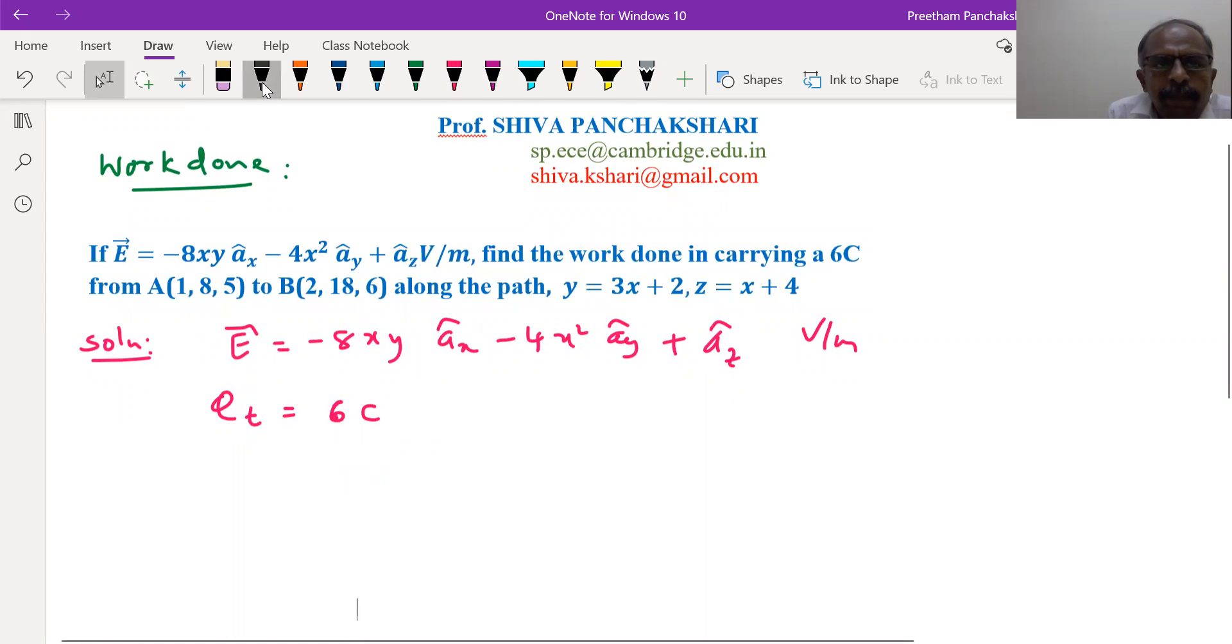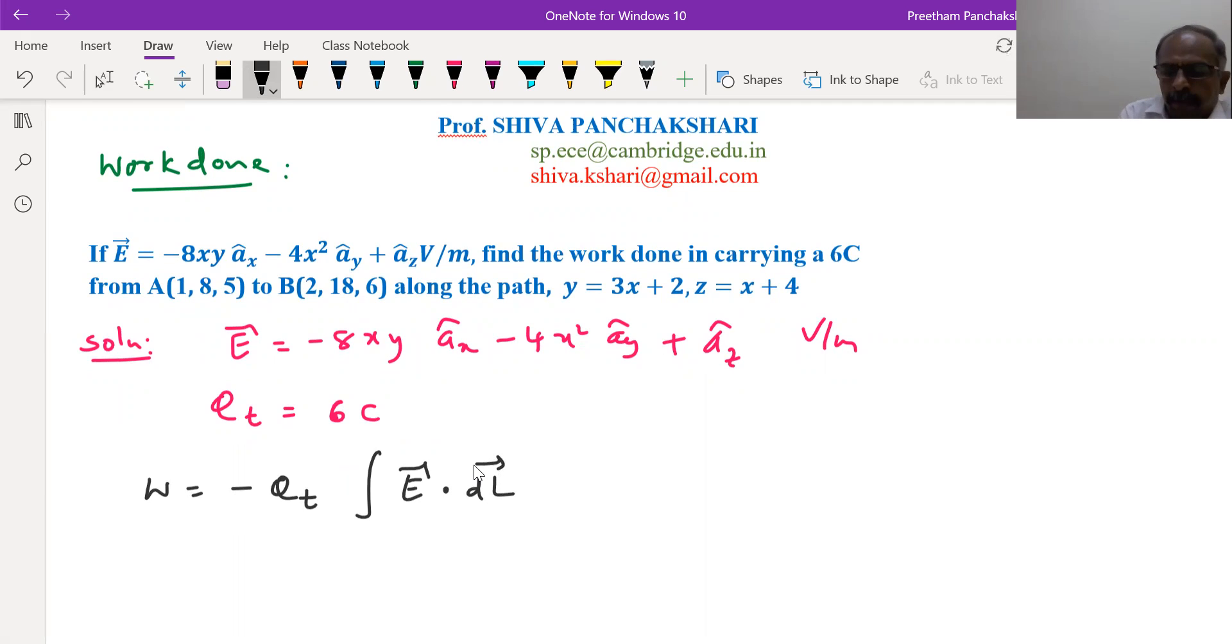Let us start with the equation for work done, which is given by minus Qt the test charge into E dot DL. So we are moving the charge from point A to point B. The limits go accordingly.